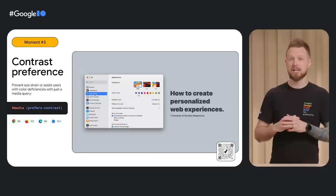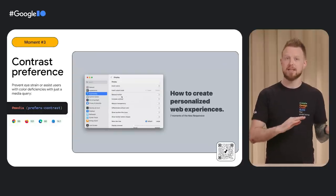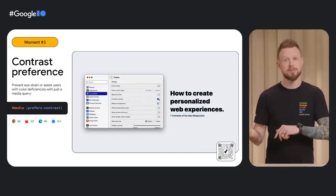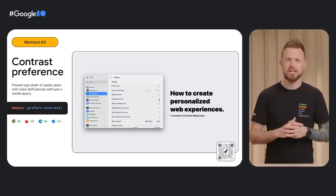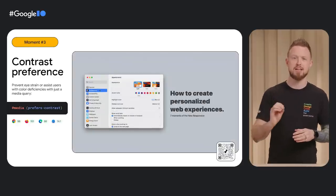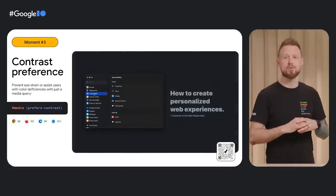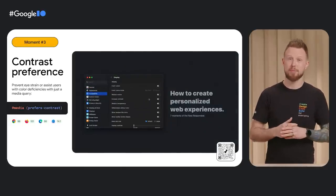Reduced motion doesn't mean no motion. The prefers-contrast media query can prevent eye strain, assist users in bright environments, and more. Here I demonstrate a light and dark adapting theme that also accommodates high contrast preferences. Imagine your site is the first one users ever had where their motion or contrast preference was respected — you'll be remembered.